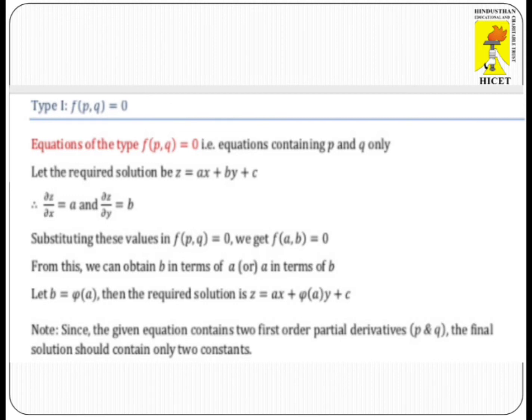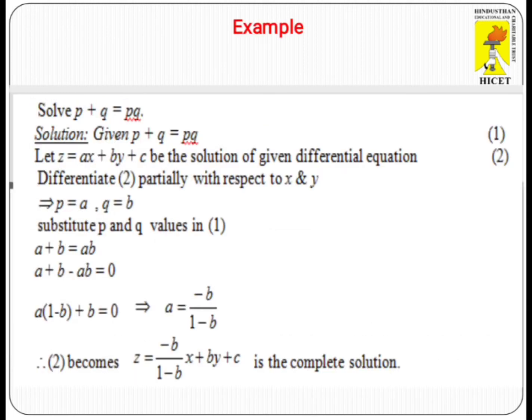From this equation, we can obtain P in terms of A, or A in terms of B. We find P equal to phi(A). Then the required solution is Z = AX + phi(A)·Y + C, which is the complete integral of the given partial differential equation.